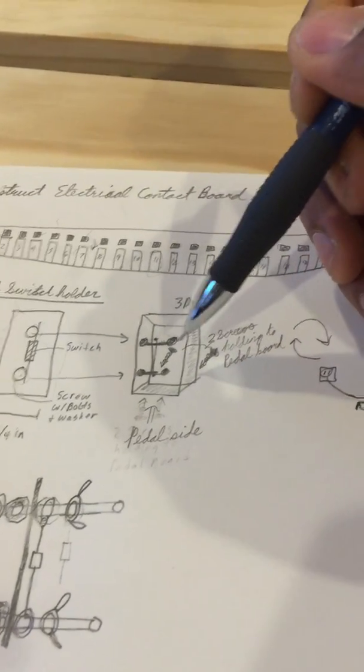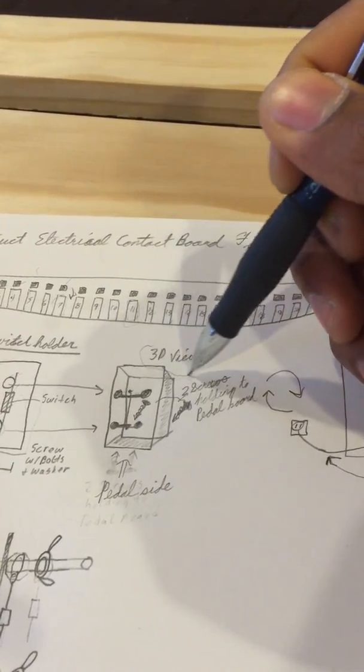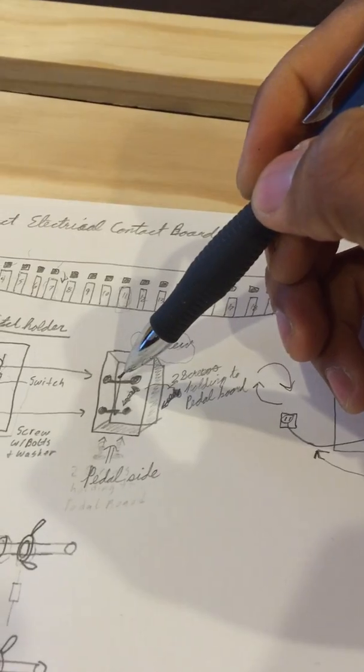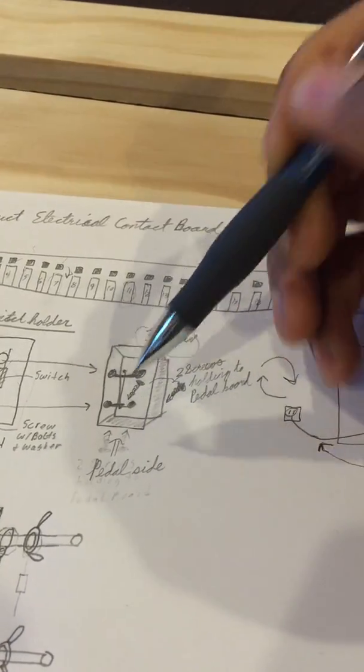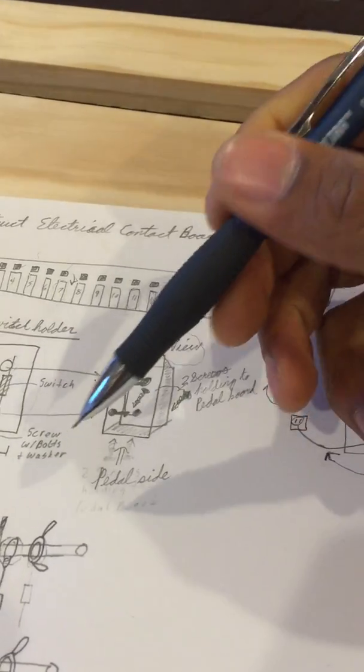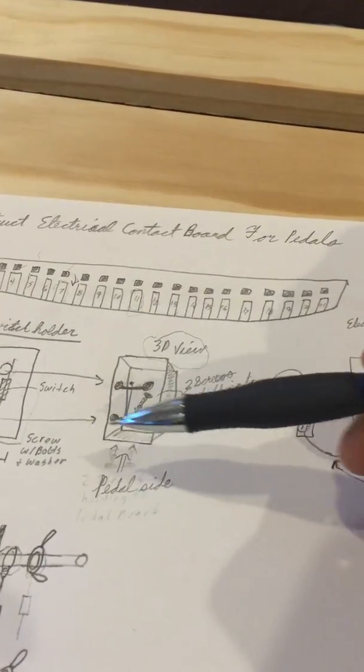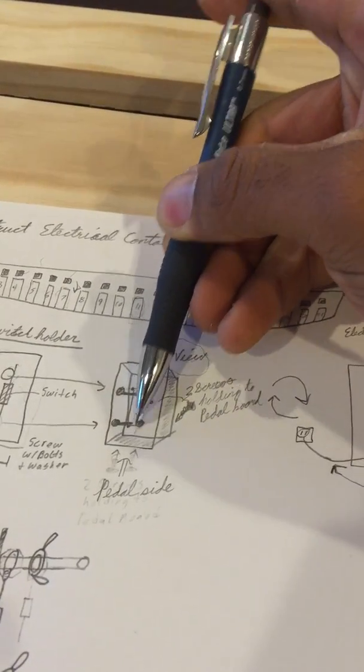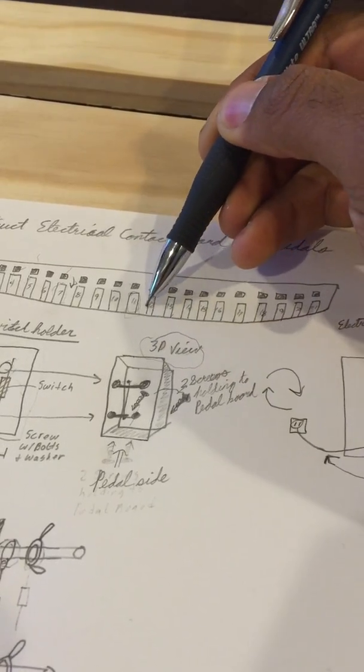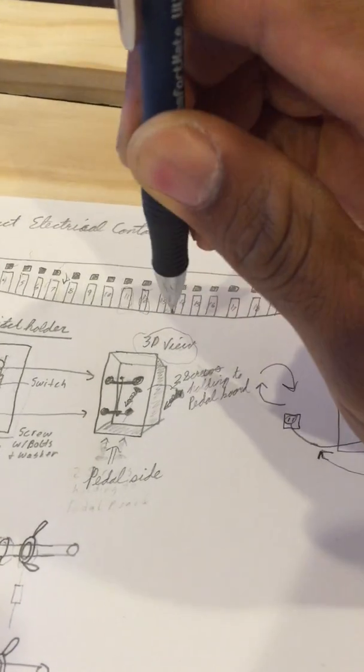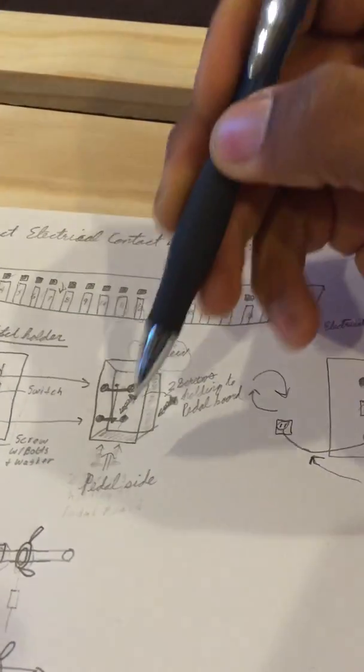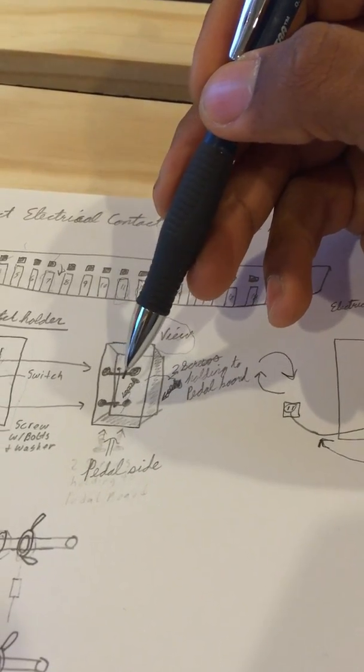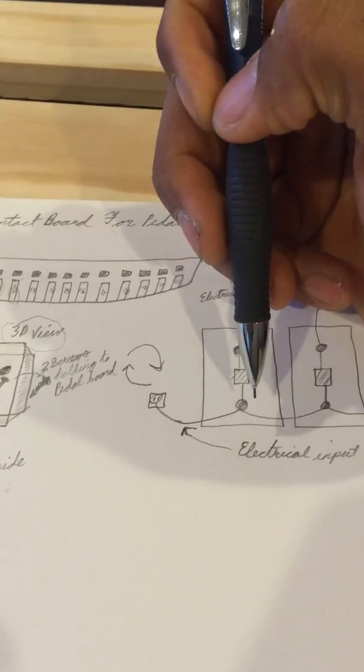Here, what I'm showing now is more kind of like this 3D view of it. You can see my drawing abilities are kind of limited. This is looking from the pedal side in, so the pedal will come down and activate this. This will be the switch, this narrow line right here, and then these are the screws that will be anchoring our wooden reed switch holder in place.